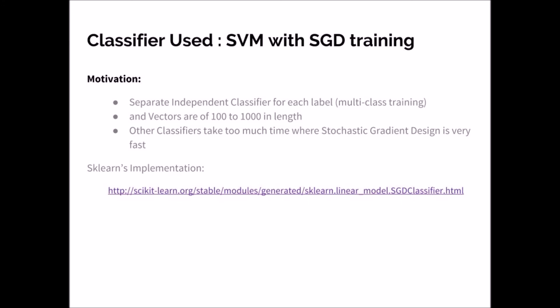Also, the vector length can be from 100 to 1000 length. Therefore, we went with scikit-learn's implementation of SVM with stochastic gradient descent training as they are very very fast comparatively.